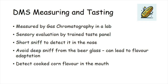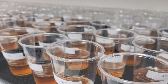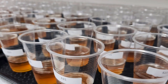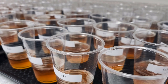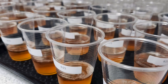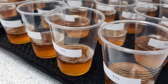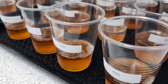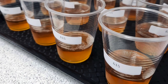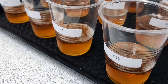The gold standard for measuring DMS in a lab is gas chromatography. In this process, the beer is heated to release the DMS, which is then separated and quantified. While not as precise as gas chromatography, a trained sensory panel can detect DMS in beer by tasting, which can help determine if the DMS level is above an acceptable level for the style.